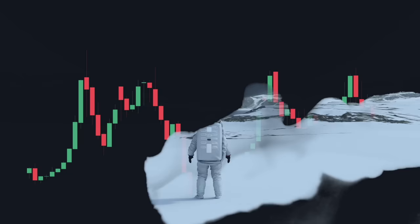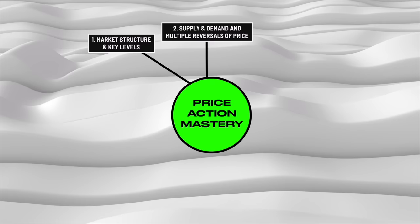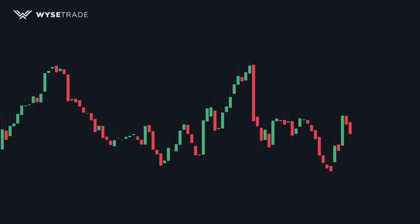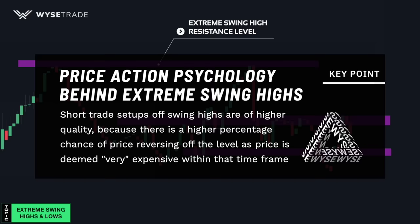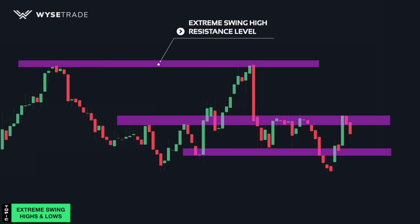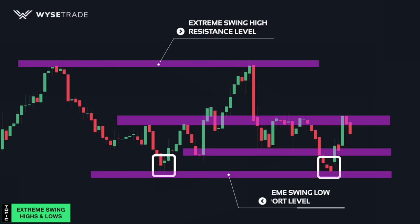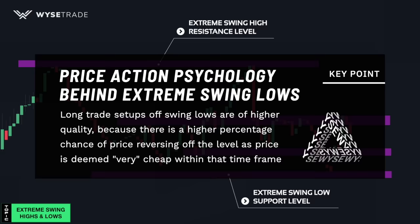Extreme swing highs and lows. These reversal points in between the swing highs and lows are your traditional key levels. The absolute highest resistance level here is your swing high key level. Short trade setups off of swing highs are of higher quality because there is a higher percentage chance of price reversing off of the level, as price is deemed very expensive within that timeframe. The absolute lowest support level here is your swing low key level. Long trade setups off of swing lows are of higher quality because there is a higher percentage chance of price reversing off the level, as price is deemed very cheap within that timeframe.